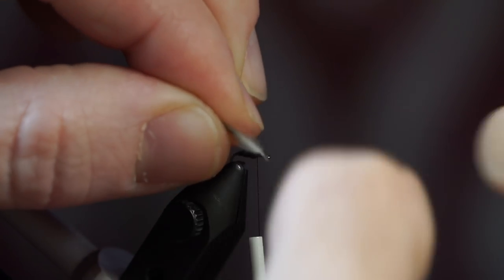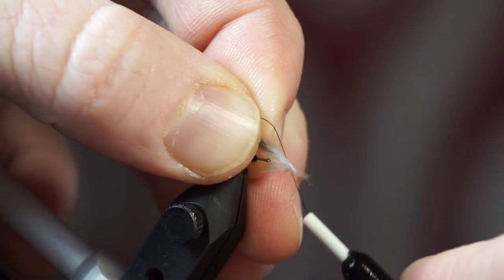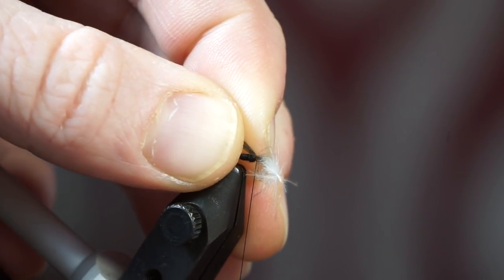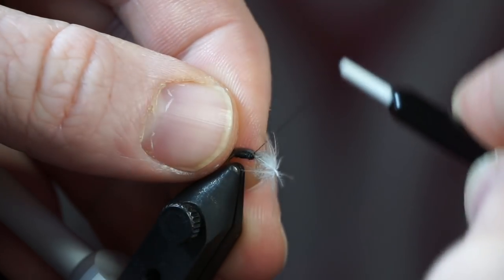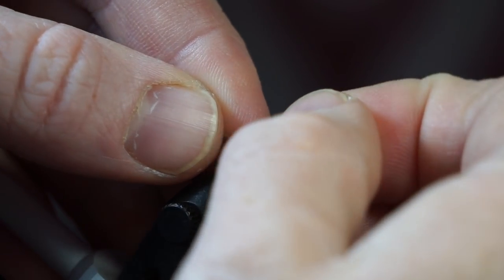Then take a CDC feather and stroke the fibers towards the tip. Then make a loose pinch wrap to attach the feather to the top of the hook, and make a second loose wrap to keep the feather from spinning.